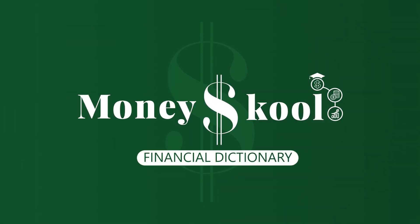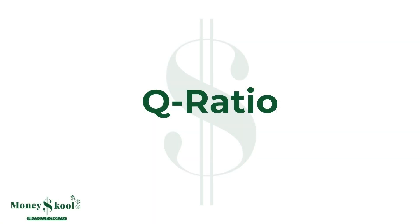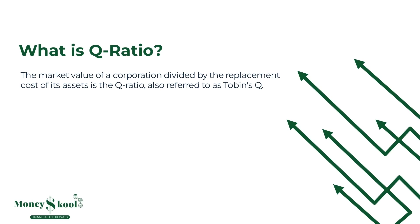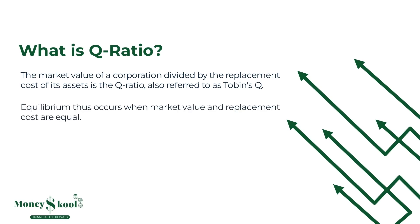Welcome to Money School Financial Dictionary. After watching this video, you should have a better understanding of the Q ratio, also known as Tobin's Q. The Q ratio is the market value of a corporation divided by the replacement cost of its assets. Equilibrium occurs when market value and replacement cost are equal.